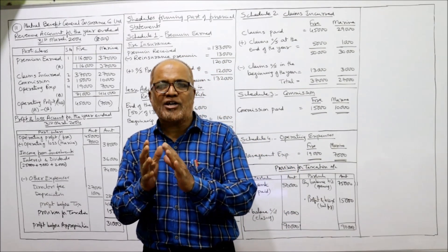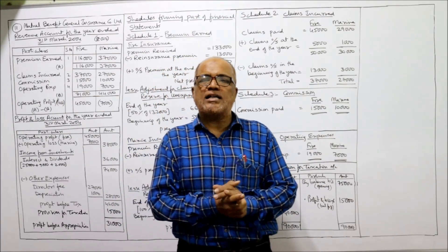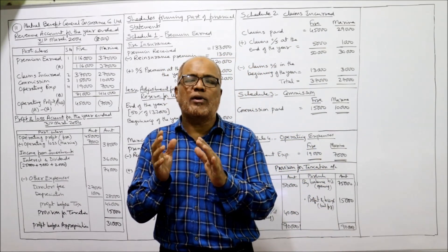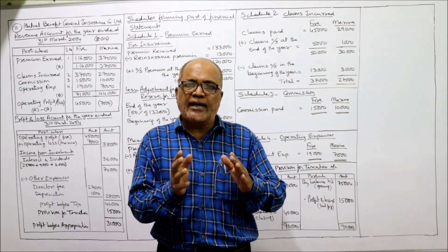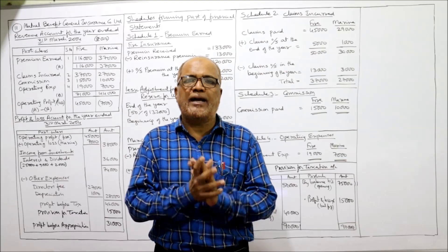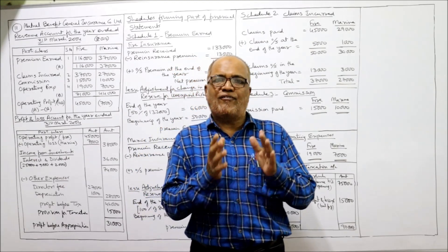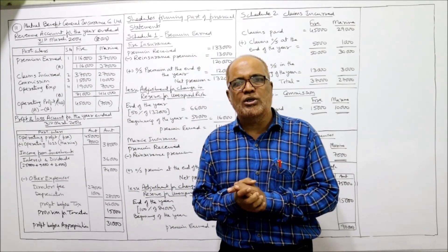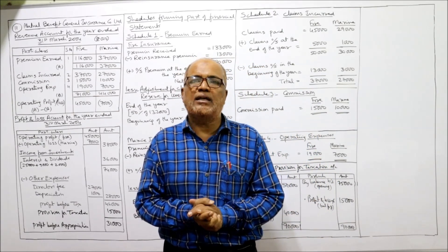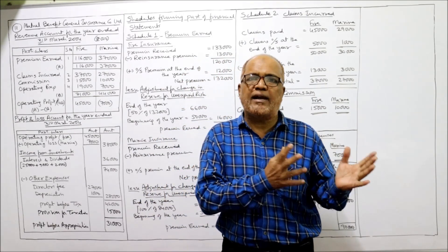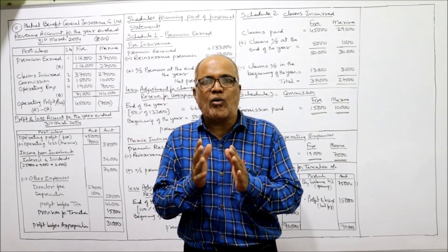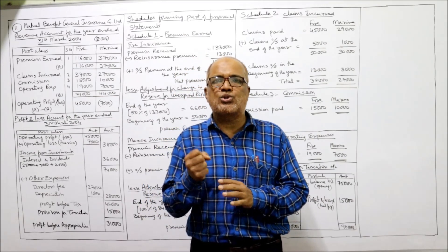Hello viewers, welcome to my channel. I'm Hashim Ali Khan. This is the last and final problem on general insurance companies — problem number 11. Already 10 problems have been completed. In the last videos I explained how to make the revenue account, fire revenue account, and marine revenue account, and what provisions of the law we have to follow while making the revenue account.